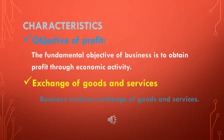The first characteristic of business is the objective of profit. The fundamental objective of business is to obtain profit through economic activity — it is the prime and most important aim. In the absence of profit, there is no possibility of business. If there is continuous loss, business activity will be stopped. Profit is the main and prime consideration; it is essential to continue the business.